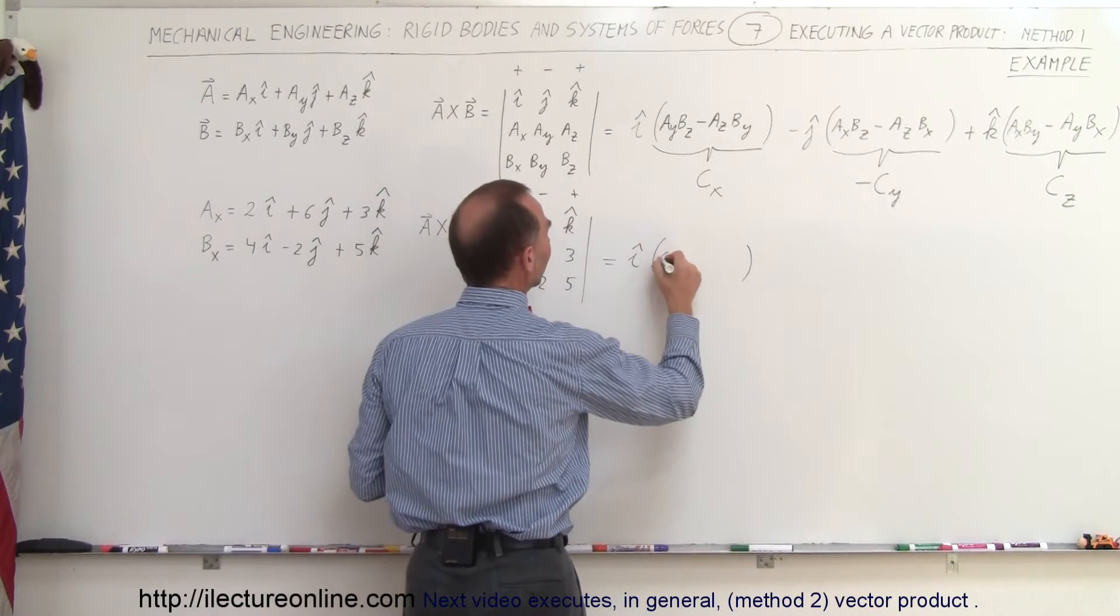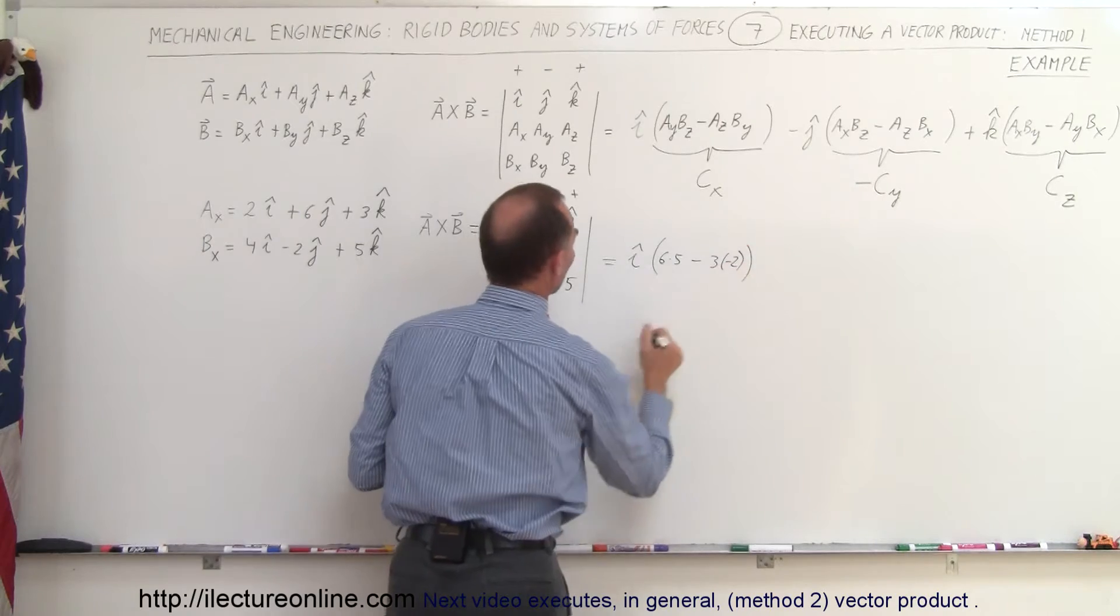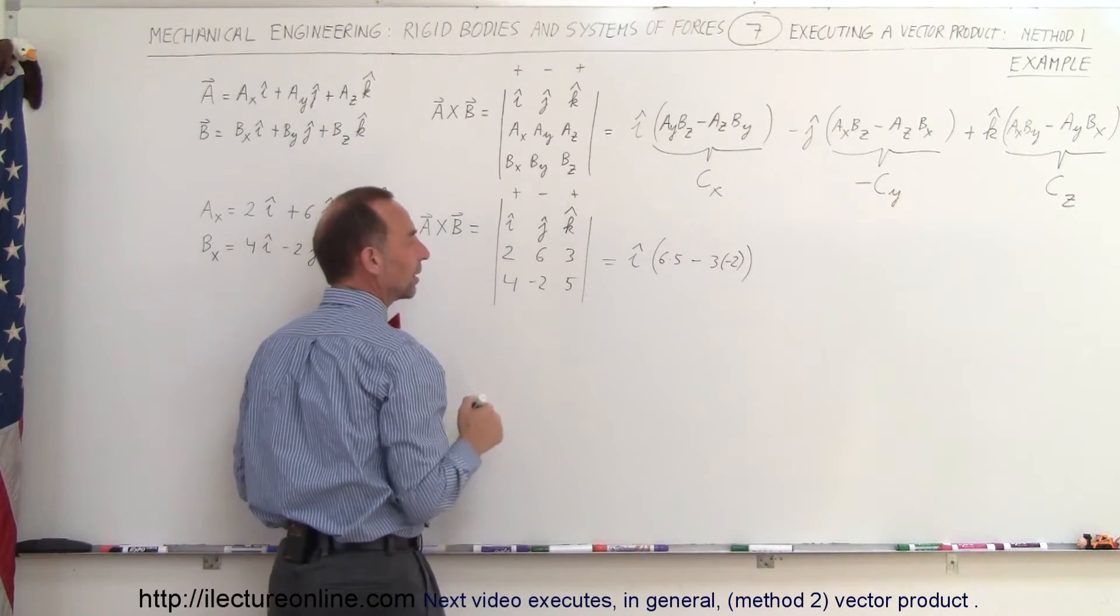So this becomes 6 times 5 minus, that would be 3 times a negative 2. So we multiply those two together and subtract, we multiply those two together.